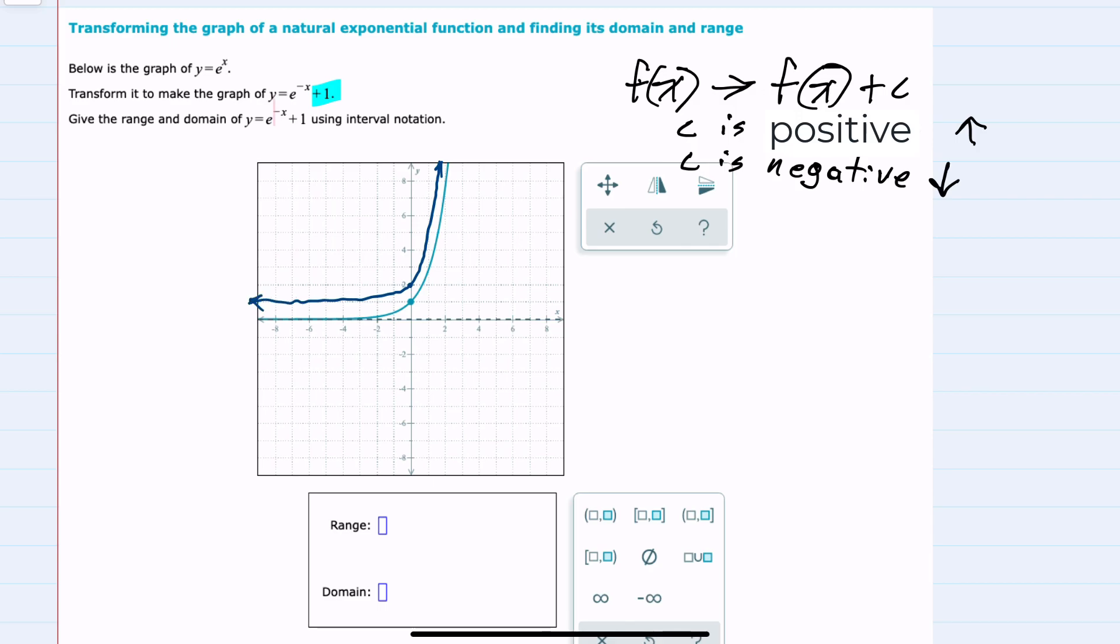But then we also have this negative x, where x is being replaced with a negative x. And our rule here is that when we replace x with a negative x, this creates a mirror across the y-axis.